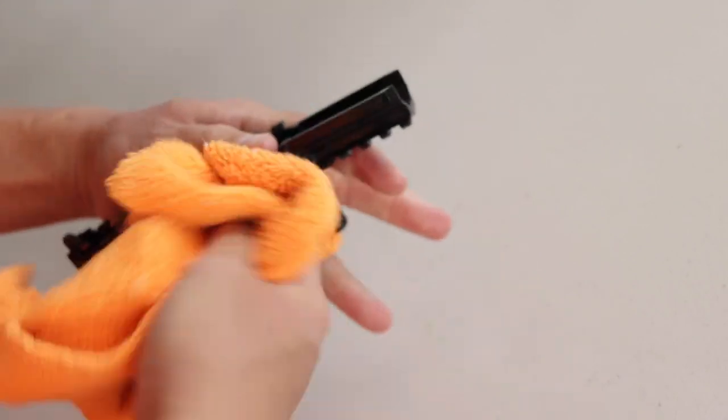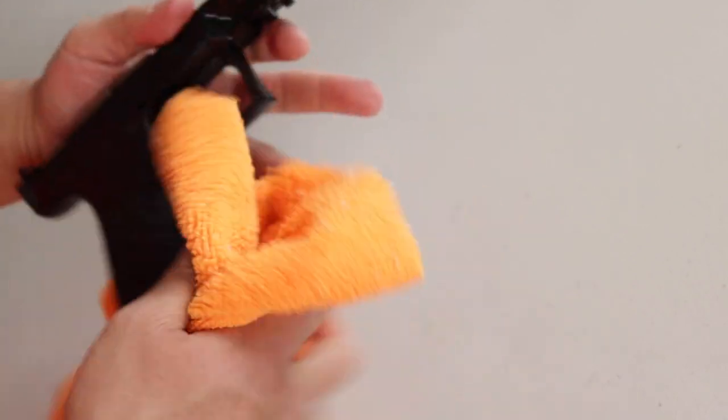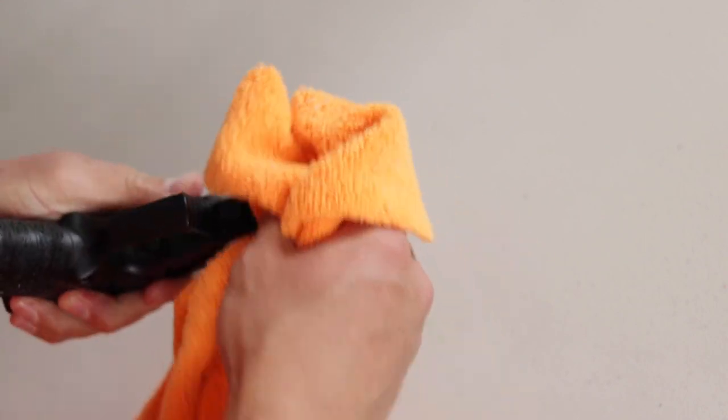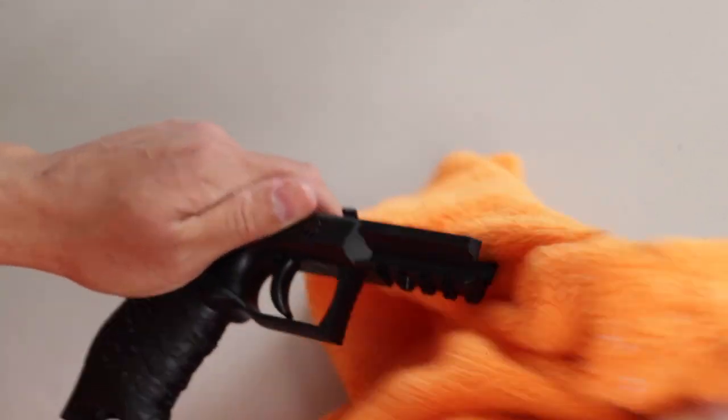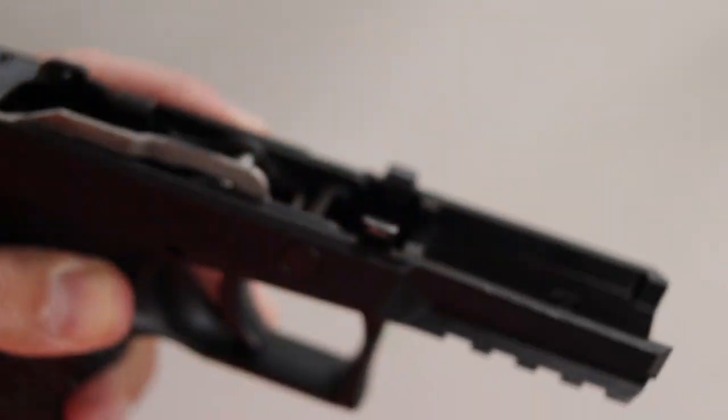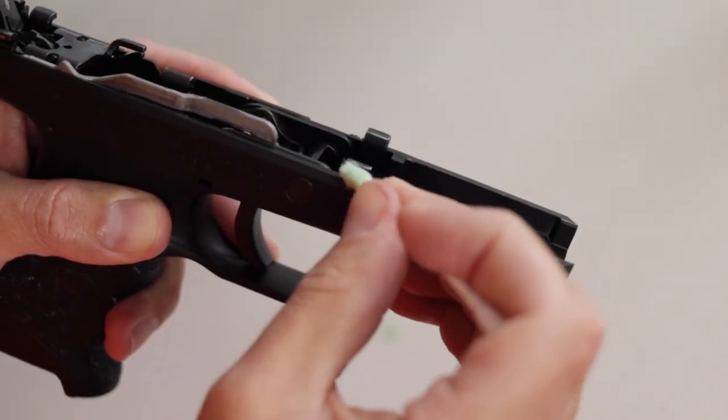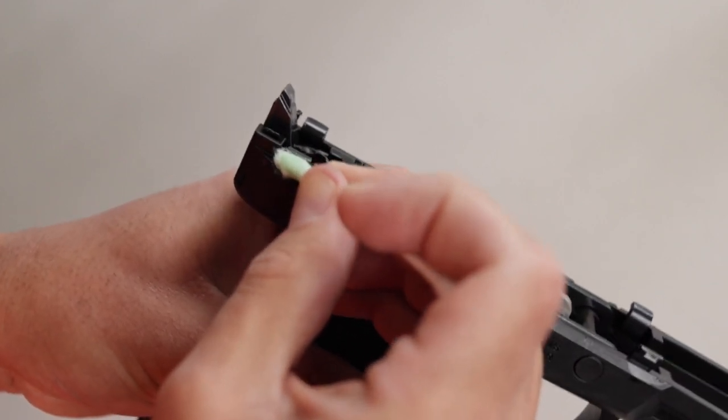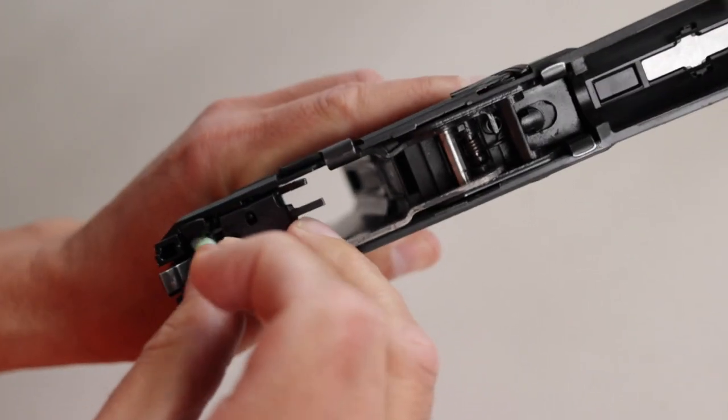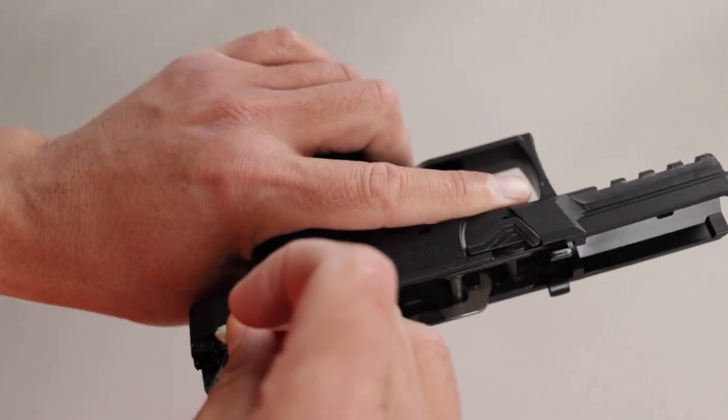Make sure to get all the excess CLP off of the outside of the frame. It's polymer, so you don't necessarily need to have it on there. It's not going to hurt it, but you just don't want anything slippery if you're trying to grab onto this. Now I'm going to go through in fine detail with a clean cotton swab. When this one gets dirty, I'll toss it, grab another swab, add CLP to it, and keep repeating the process until the swabs start to come out totally clean.